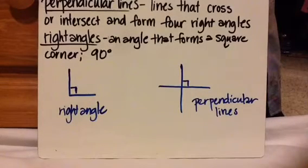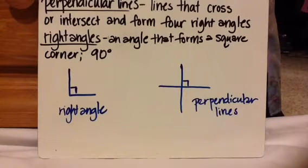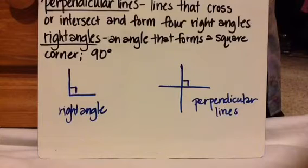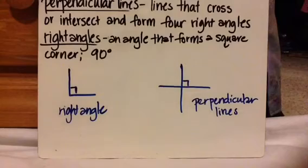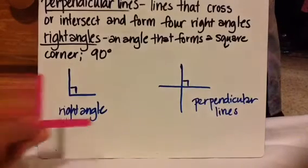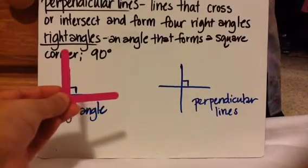The next one is perpendicular lines. These are lines that cross or intersect and they form four right angles. A right angle is an angle that forms a square corner — it has a 90-degree angle. Here's an example using the sticks showing the right angle.